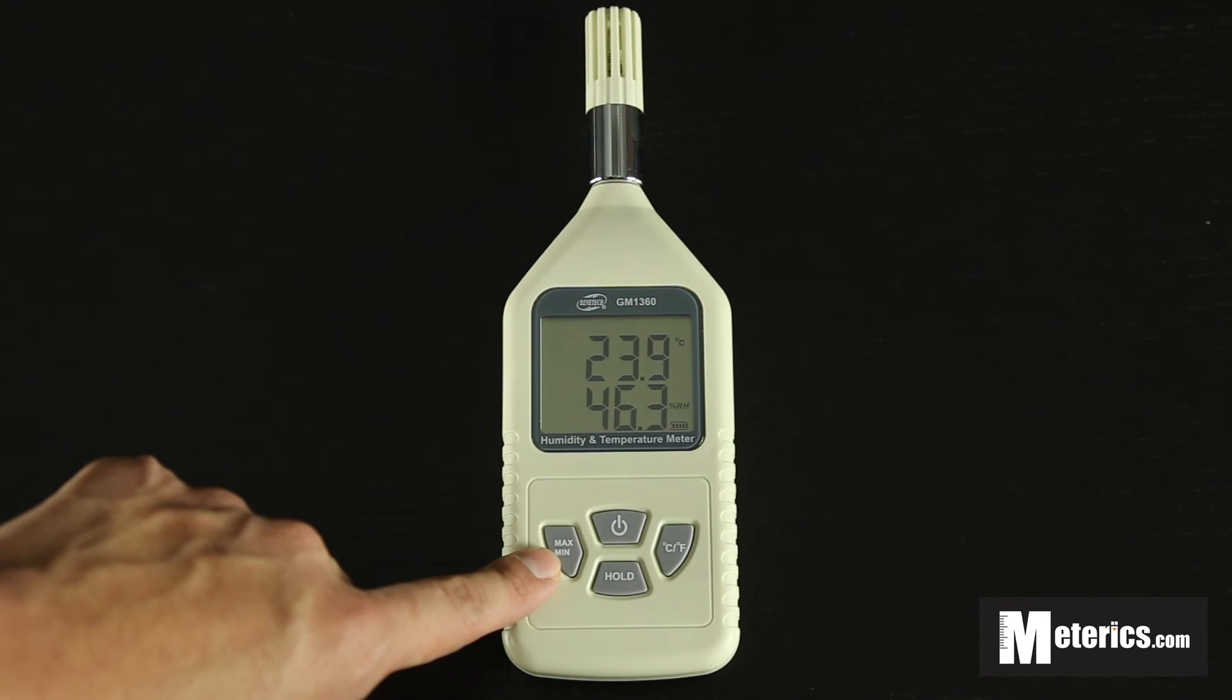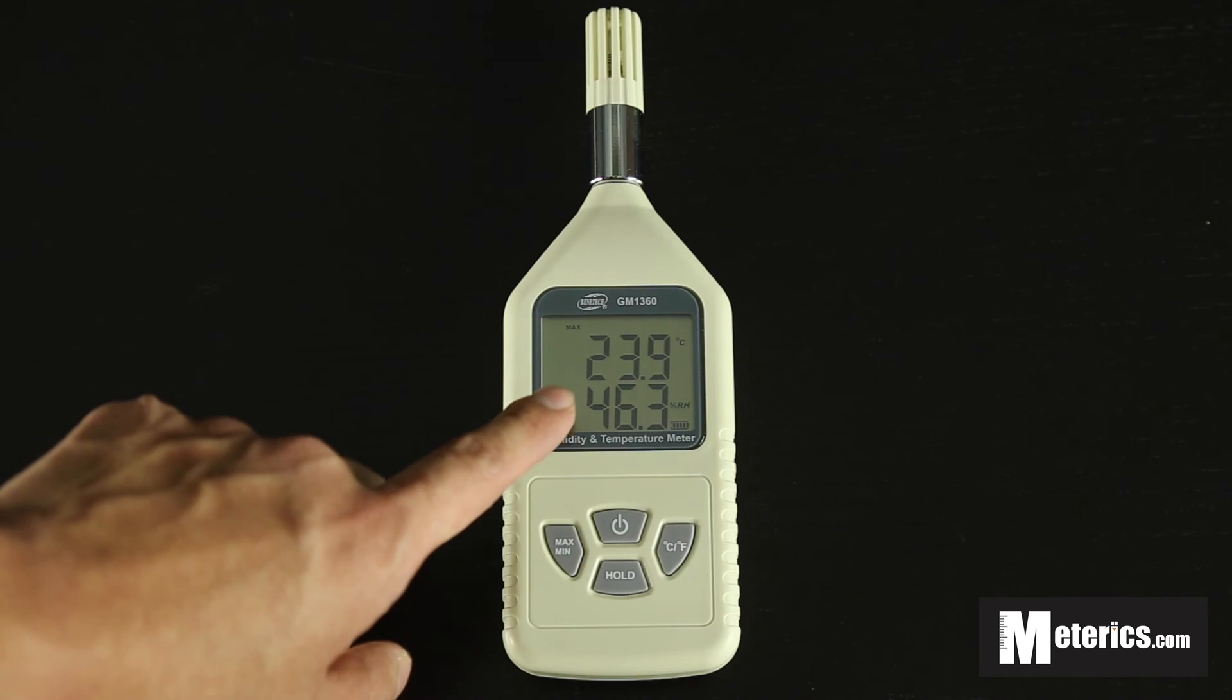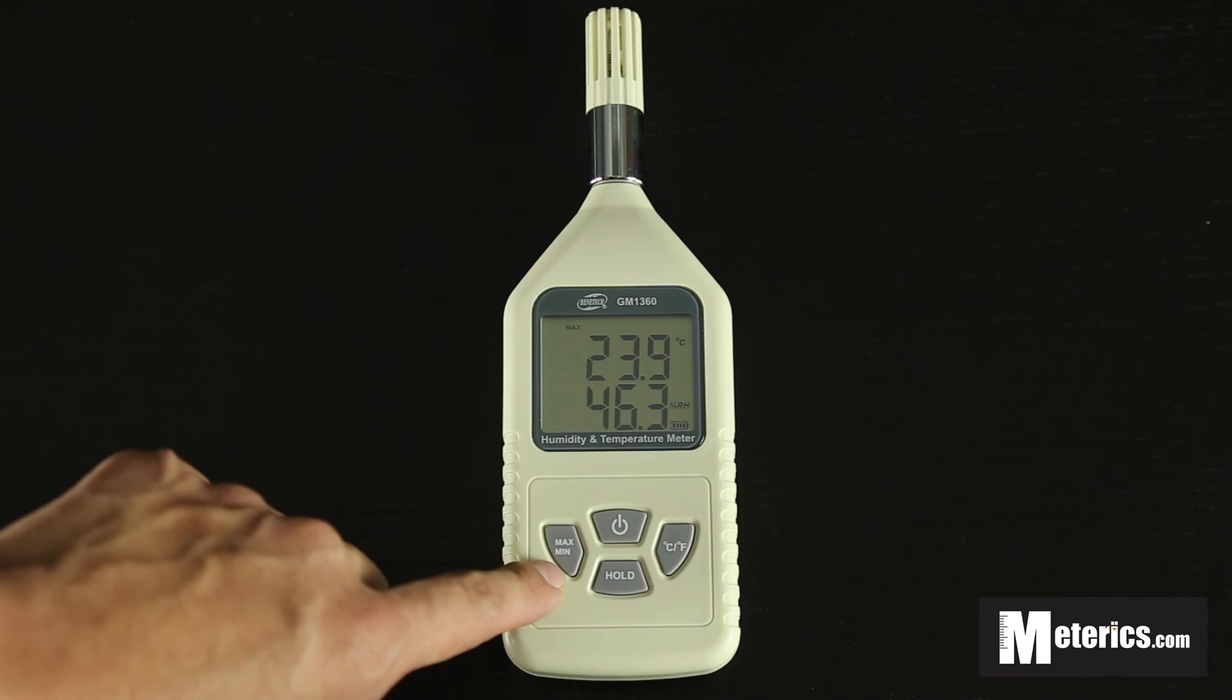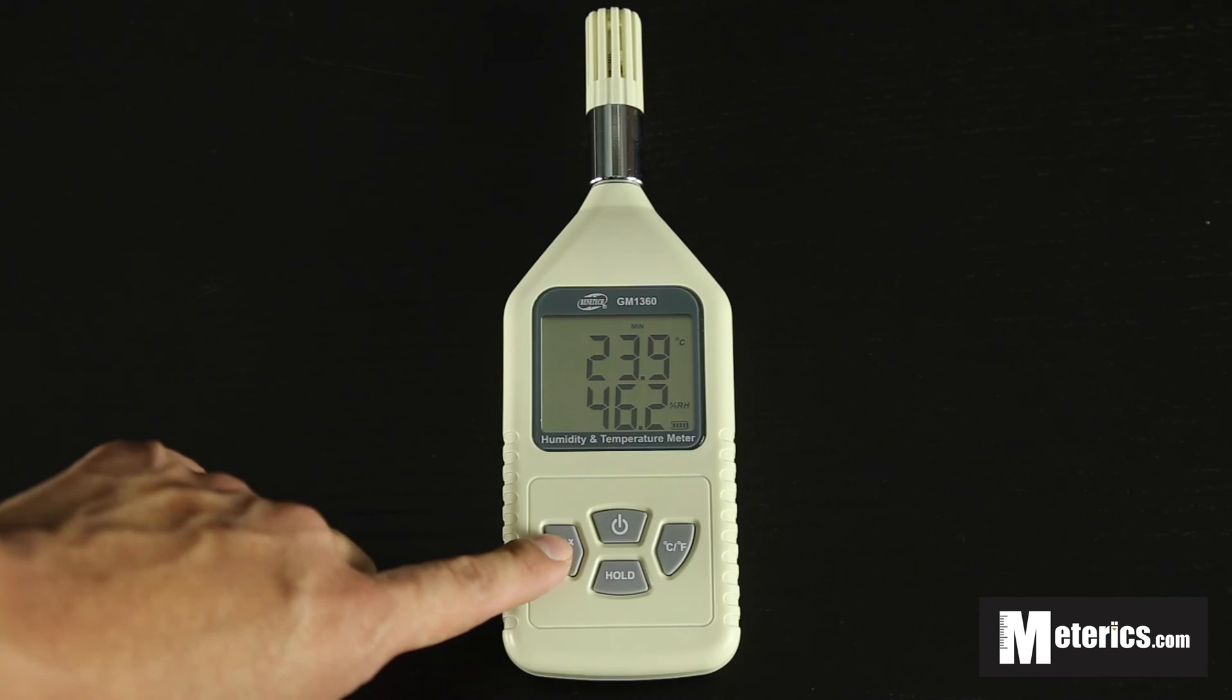Also the last button is the maximum and minimum. This basically gives you the maximum function which means anything above this current reading is going to show. And vice versa you just want to press that once again it will come to the minimum. So minimum is basically anything below this current reading.